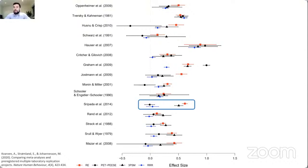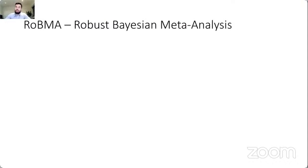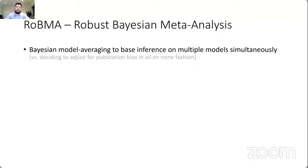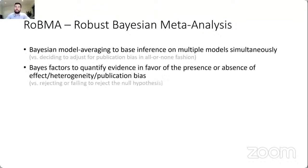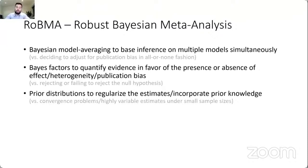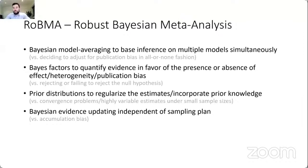We argue that you shouldn't base inference on a single model. Instead, you should use robust Bayesian meta-analysis and Bayesian model averaging to base inference on multiple models simultaneously. Rather than selecting a single model, you specify all models, fit them, and base your inference proportionately on how well each model predicted the data. You then use Bayes factors to quantify evidence for the presence or absence of the effect, heterogeneity, or publication bias. Prior distributions can regularize estimates, incorporate prior knowledge, and enable Bayesian evidence updating independent of the sampling plan.